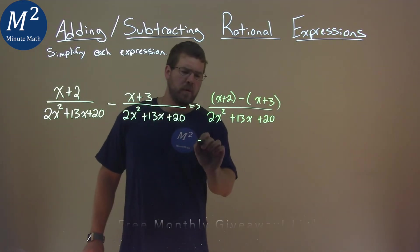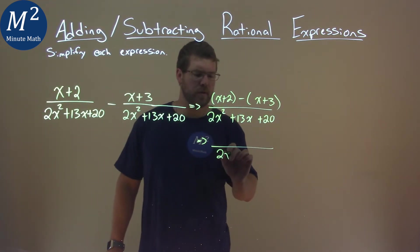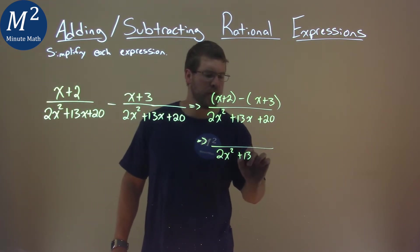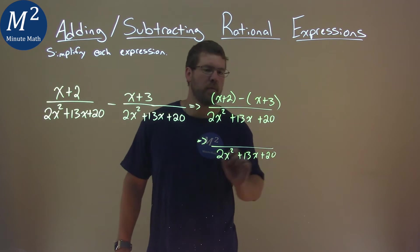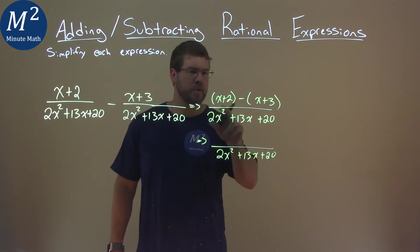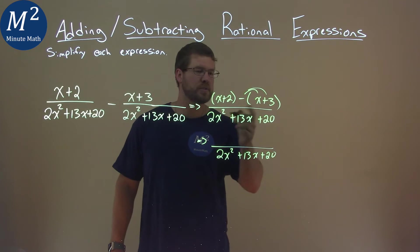So, we now want to combine the numerator. The denominator keeps the same, 2x squared plus 13x plus 20. But the numerator, make sure we combine our like terms. Make sure we distribute this subtraction sign.